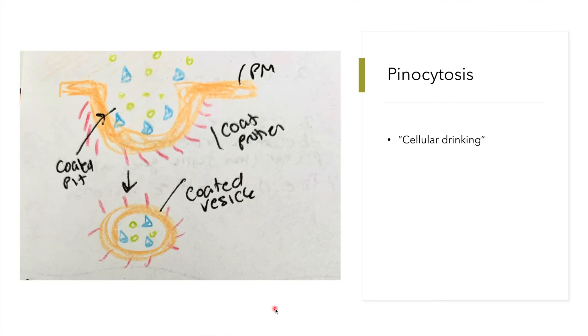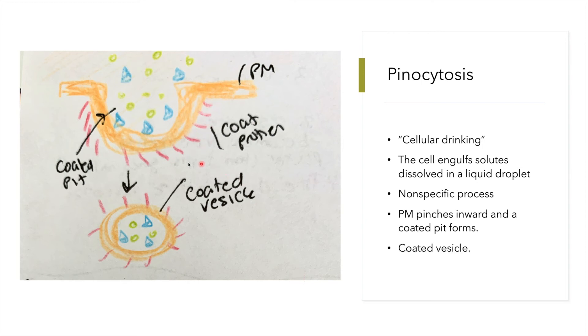Pinocytosis is known as cellular drinking. It is the endocytosis of fluid droplets, where the cell engulfs solutes dissolved in a liquid droplet. This is a non-specific process. The plasma membrane pinches inward and forms a coated pit. Once the vesicle pinches off completely, it forms a coated vesicle holding the dissolved solutes.